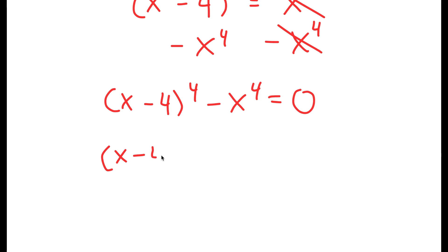Now, I'm going to rewrite this as x minus 4 to the power of 2 to the power of 2 minus x to the power of 2 to the power of 2 is equal to 0.